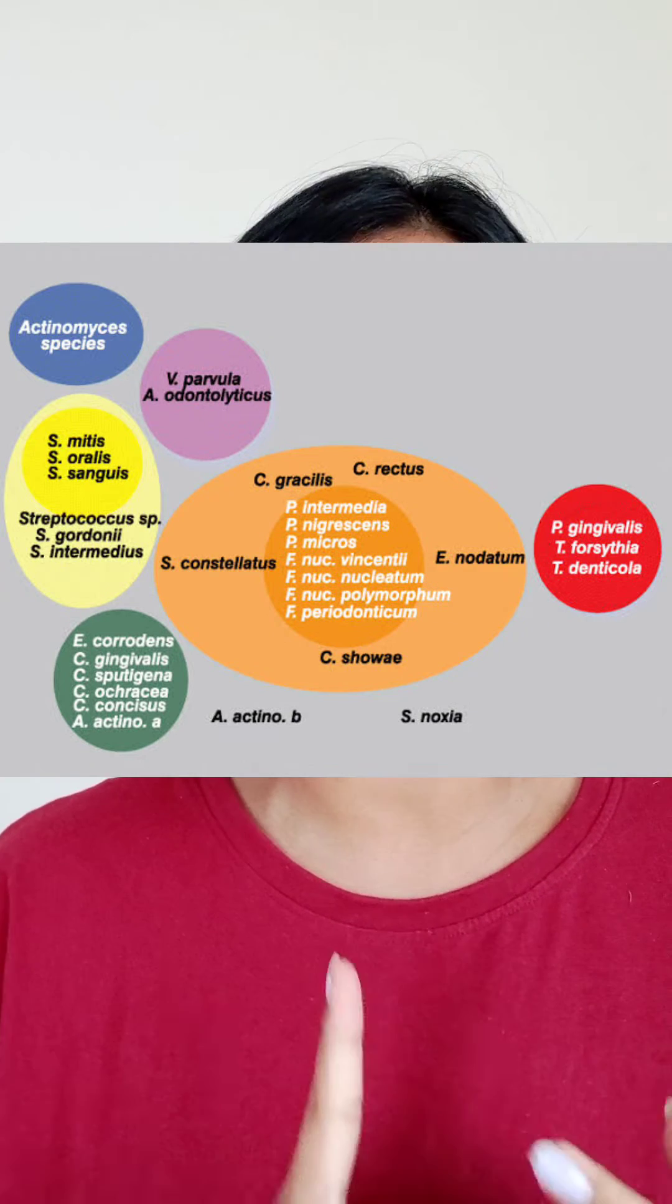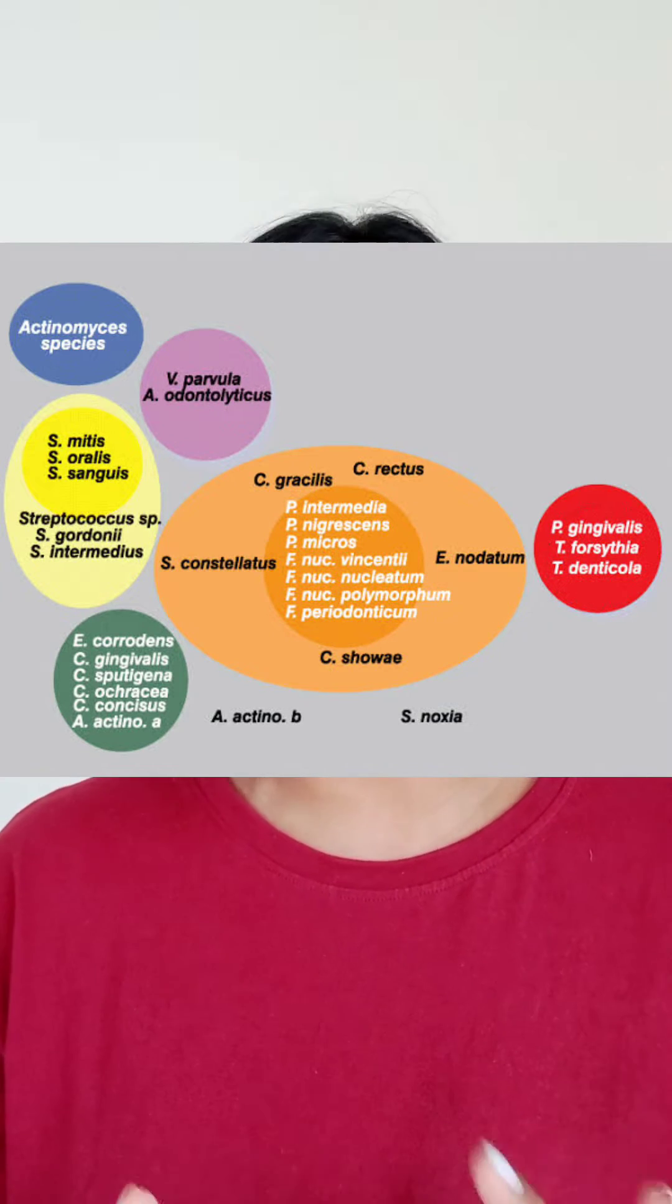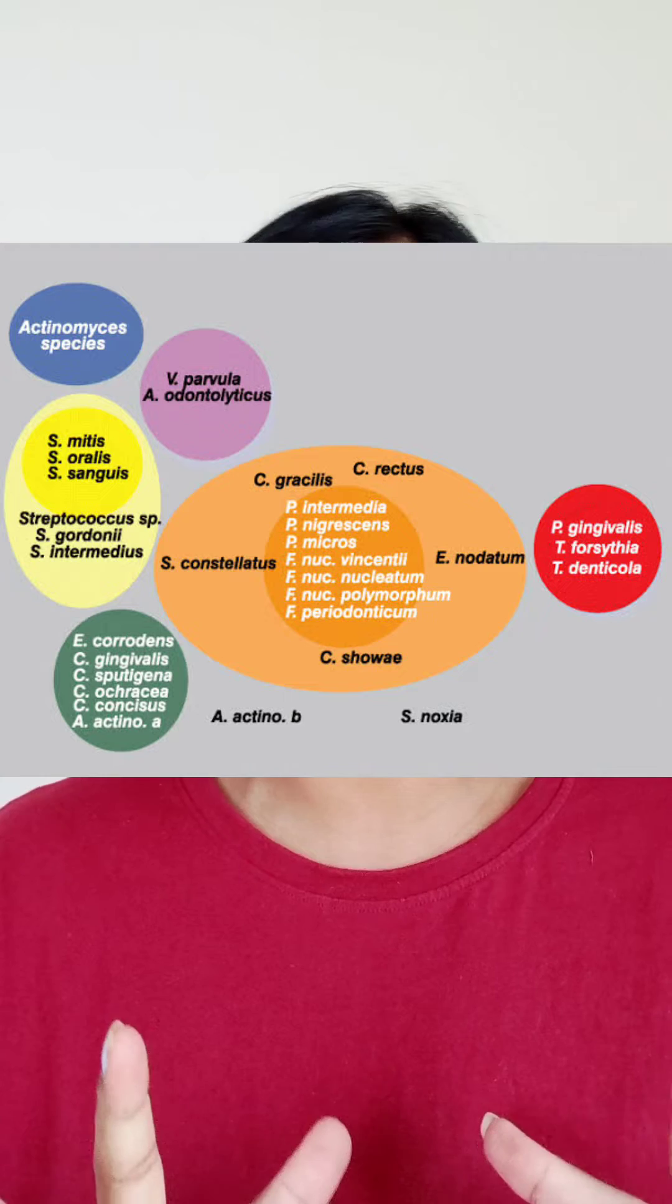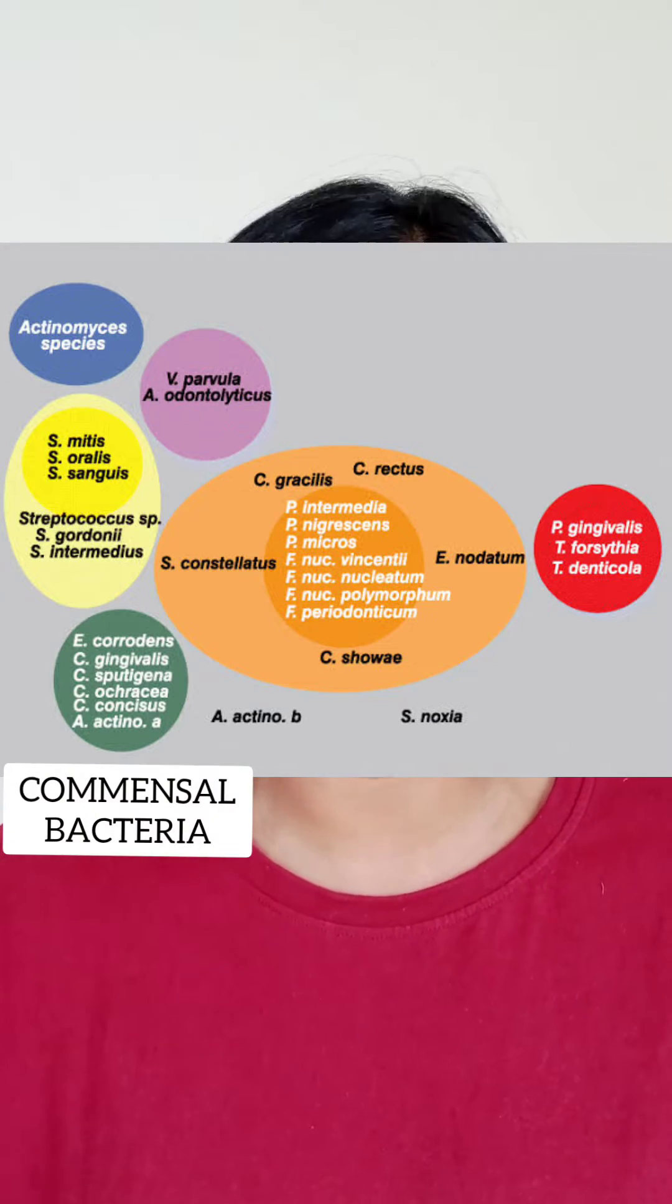The purple, blue, green, and yellow complexes are almost harmless. These in fact are the friendly bacteria. These are called the commensal bacteria.